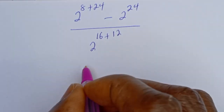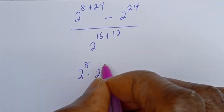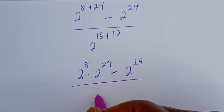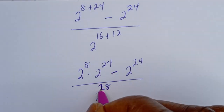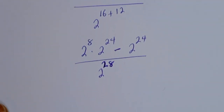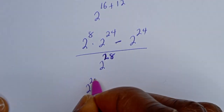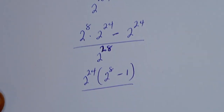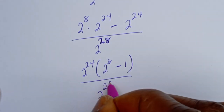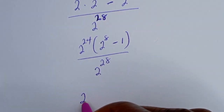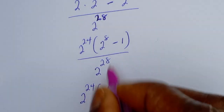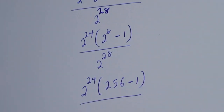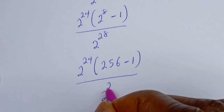This can be written as 2 to the power of 8 multiplied by 2 to the power of 24, minus 2 to the power of 24, divided by 2 to the power of 28. Now 2 to the power of 24 is common, so we factor it out: 2 to the power of 24 times bracket 2 to the power of 8 minus 1, all over 2 to the power of 28. That is 2 to the power of 24 times bracket 256 minus 1, over 2 to the power of 28.